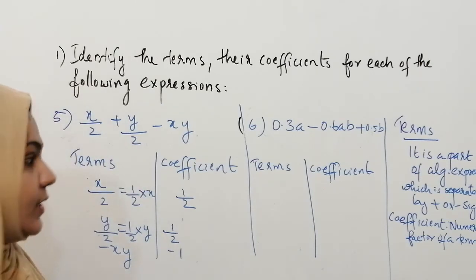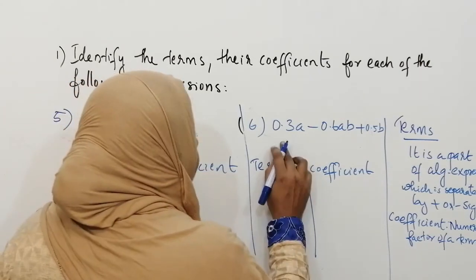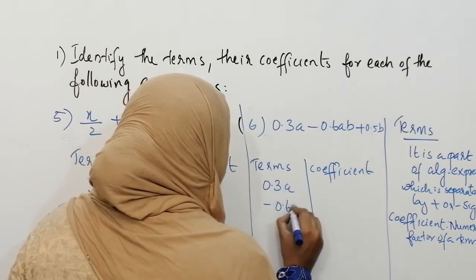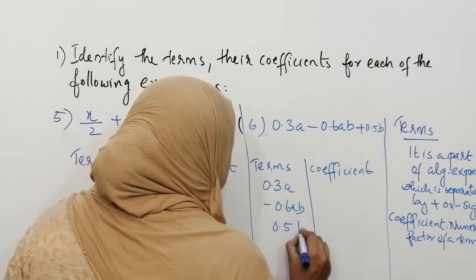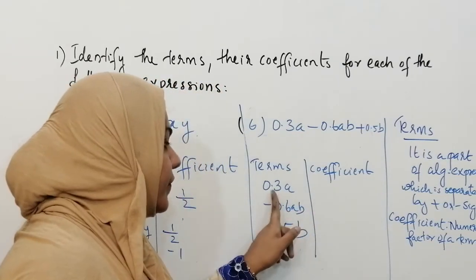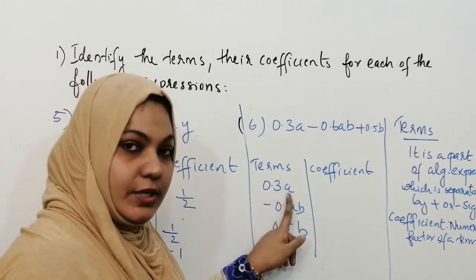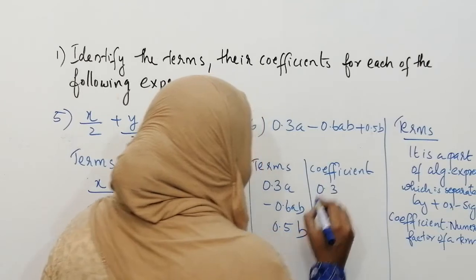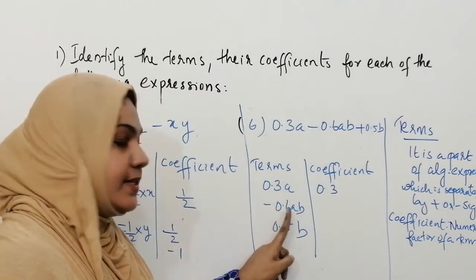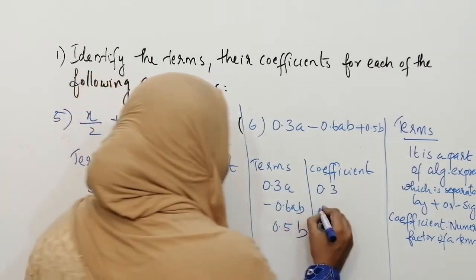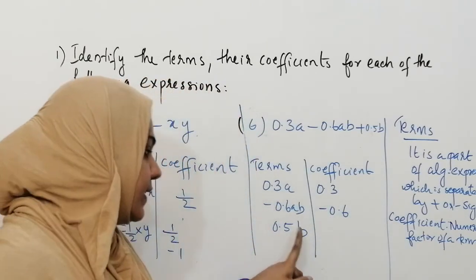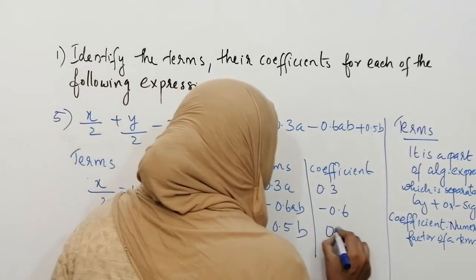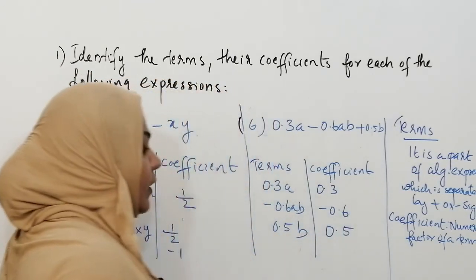Now we can do the sixth question. Here also there are three terms. The coefficient of 0.3a is 0.3, because 0.3 into a is 0.3a. The coefficient of minus 0.6ab is minus 0.6. The coefficient of 0.5b is 0.5, because 0.5 into b is 0.5b.